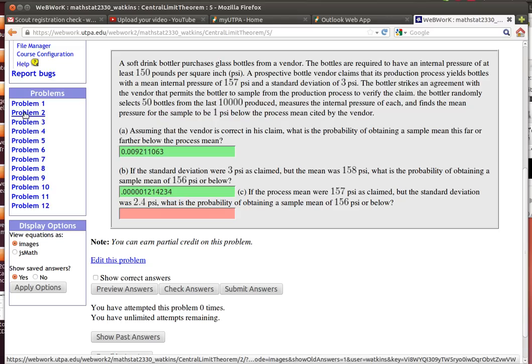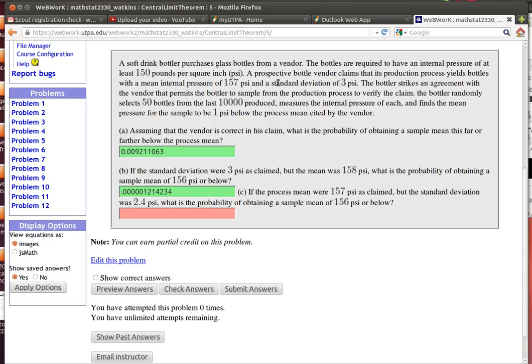We're looking at problem 5 from the WebWorks Central Limit Theorem homework. We're going to examine what's happening here. We're looking at a vendor who's selling some pop bottles. A pop bottle has to be able to handle a certain amount of pressure because that carbonated pop puts some pressure on things.